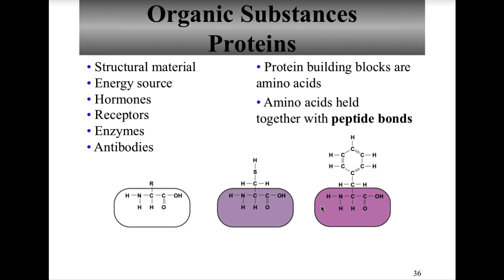Proteins are a very diverse group playing roles as structural material, energy sources, receptors, enzymes, and antibodies. The basic structure includes an amino group (NH2), a carboxyl group (C=O-OH), and a remainder or side chain group (R group). It is that R group that makes each of the 20 amino acids different from one another.